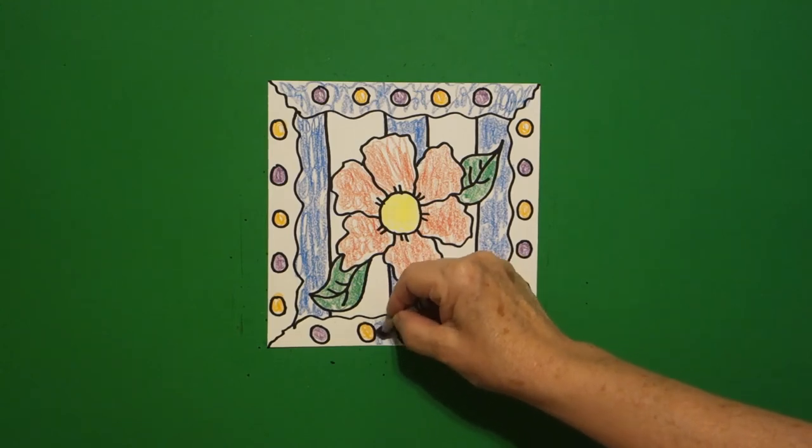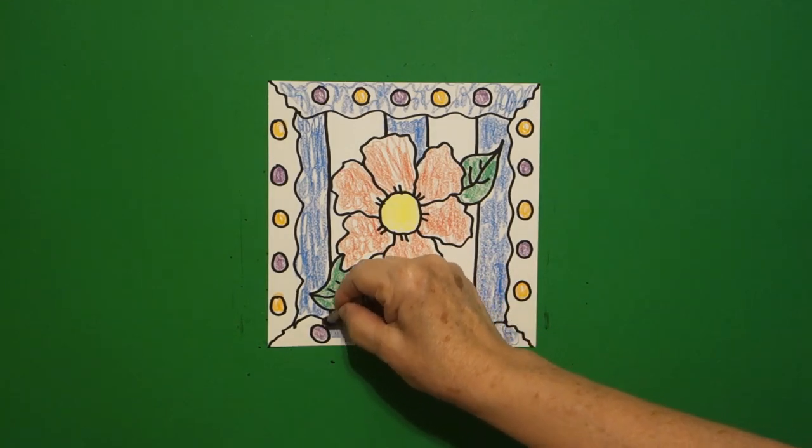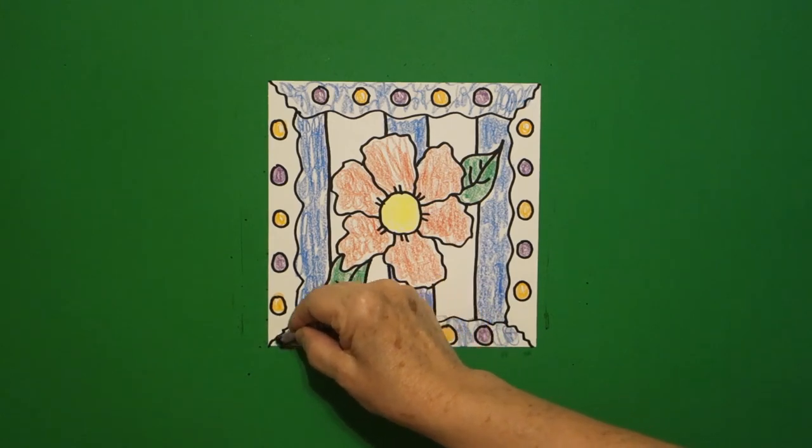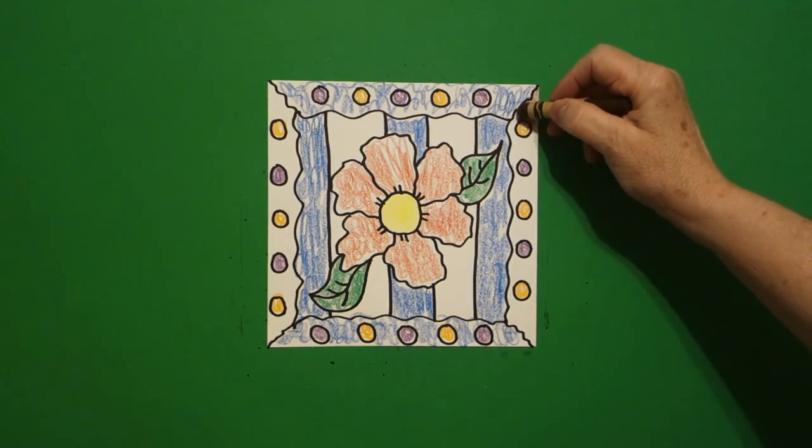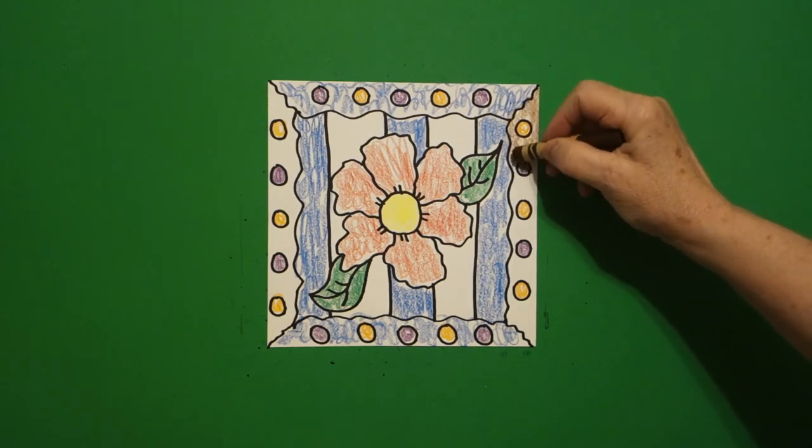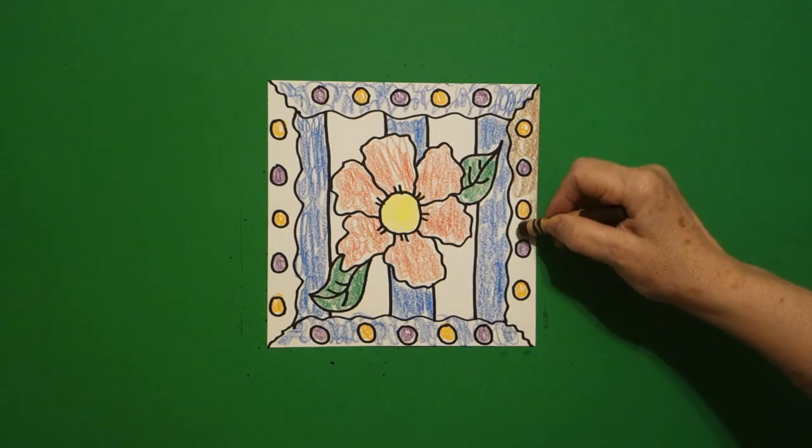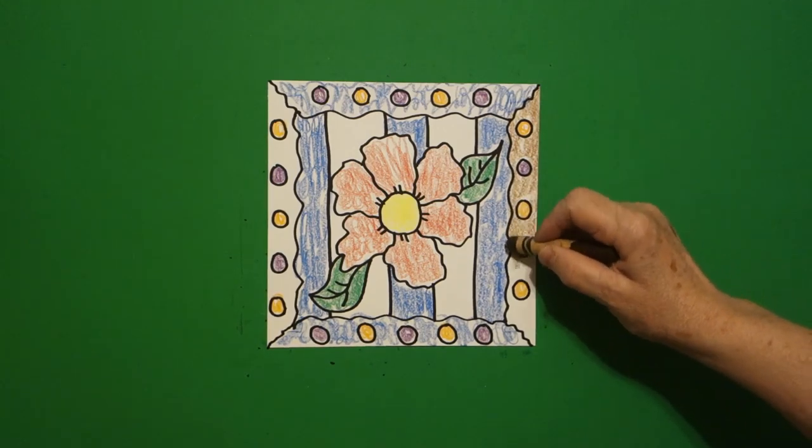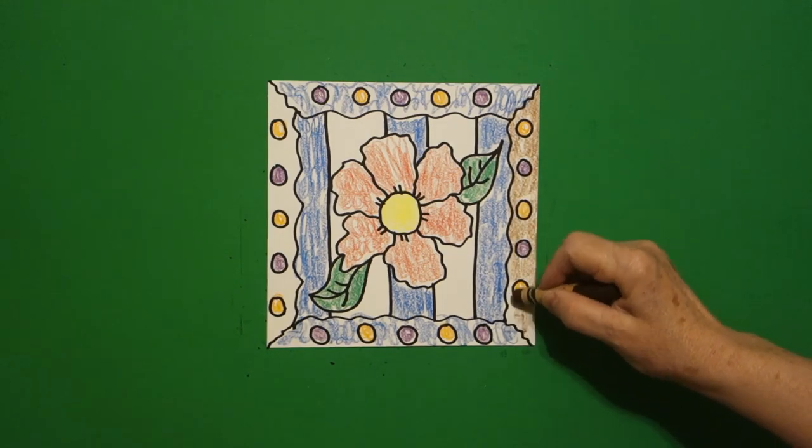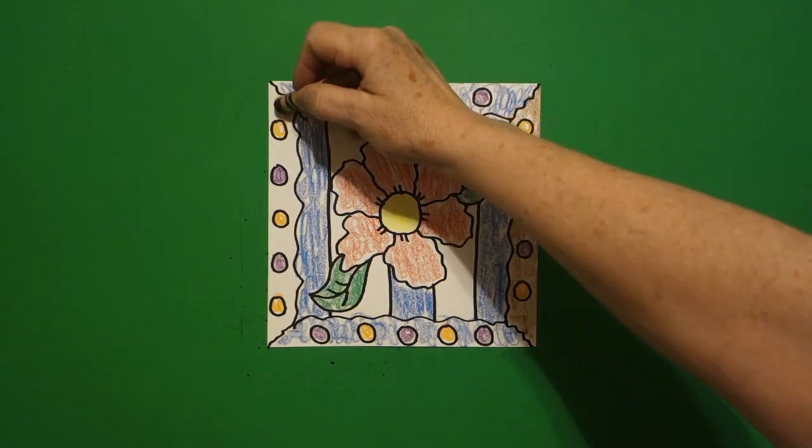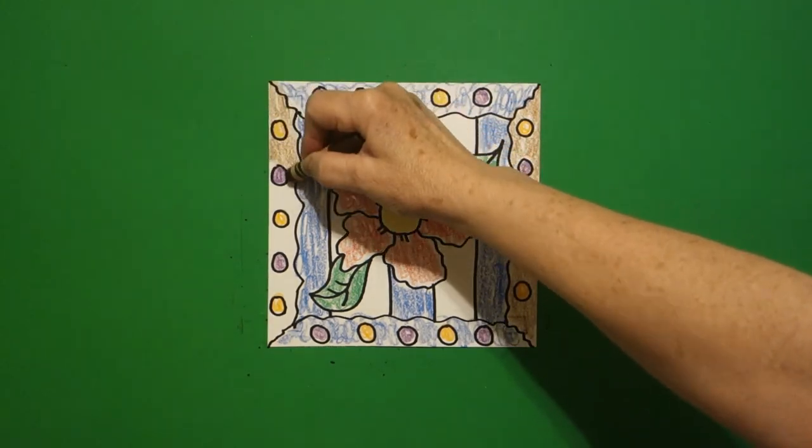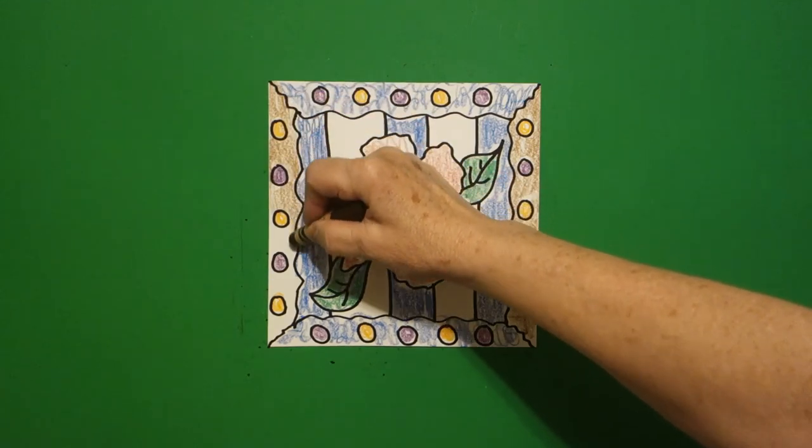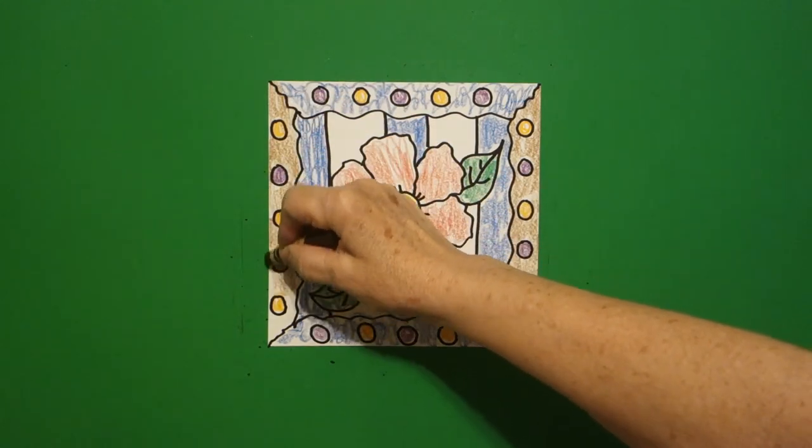Keep going. Now, the other thing about this project is, it is a total right brain project. In other words, you can color this in and not think about anything except coloring. Sometimes, that's the best kind of art to do. You don't do it for a project, school project, homework. You just do it because you're exercising your right brain. So, that's the other reason for doing this project. Get yourself creatively going.